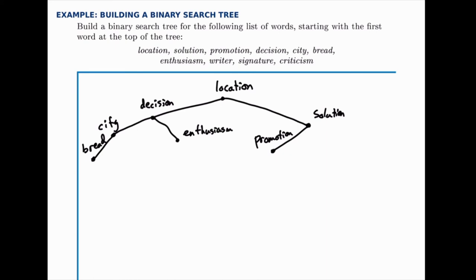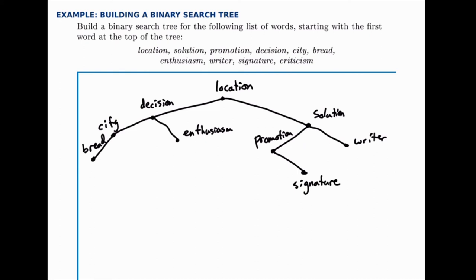'Writer' — start at the top, it's after 'location' and after 'solution.' 'Signature' — signature is after 'location,' but before 'solution,' and after 'promotion.' Then, 'criticism' is before 'location,' before 'decision,' and after 'city.'